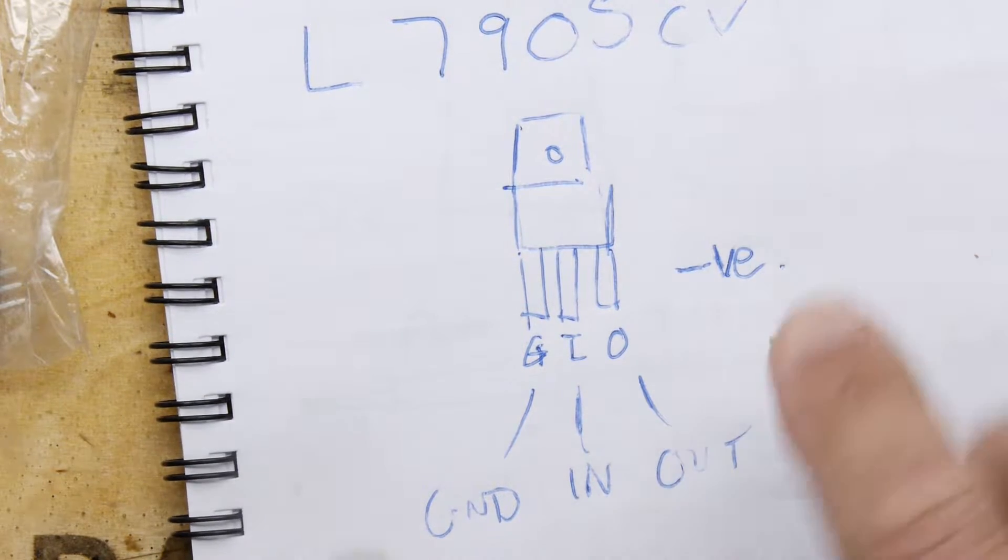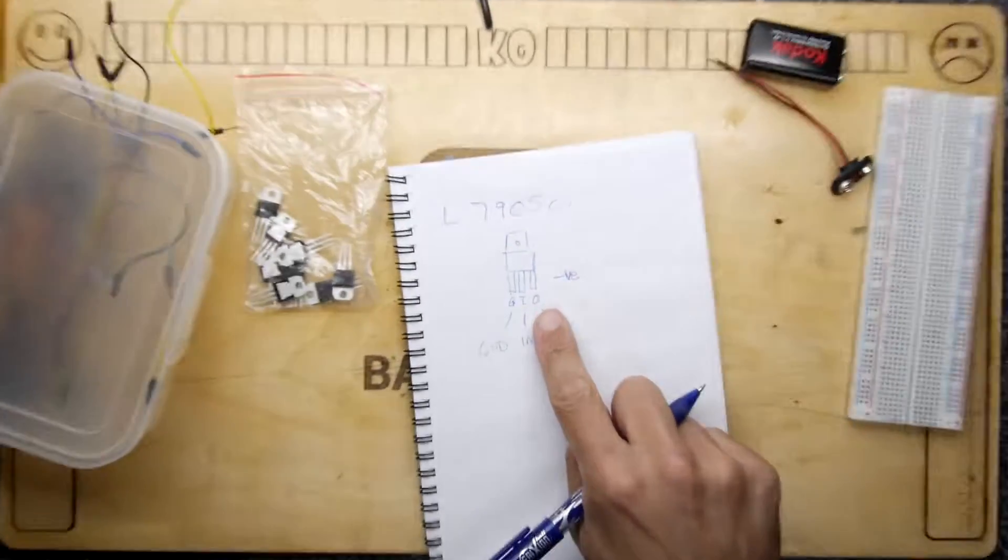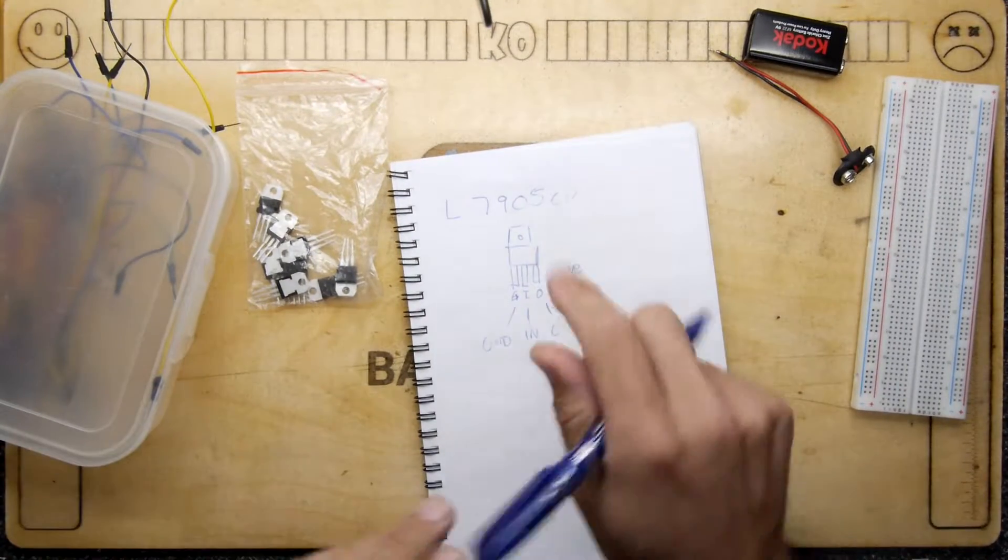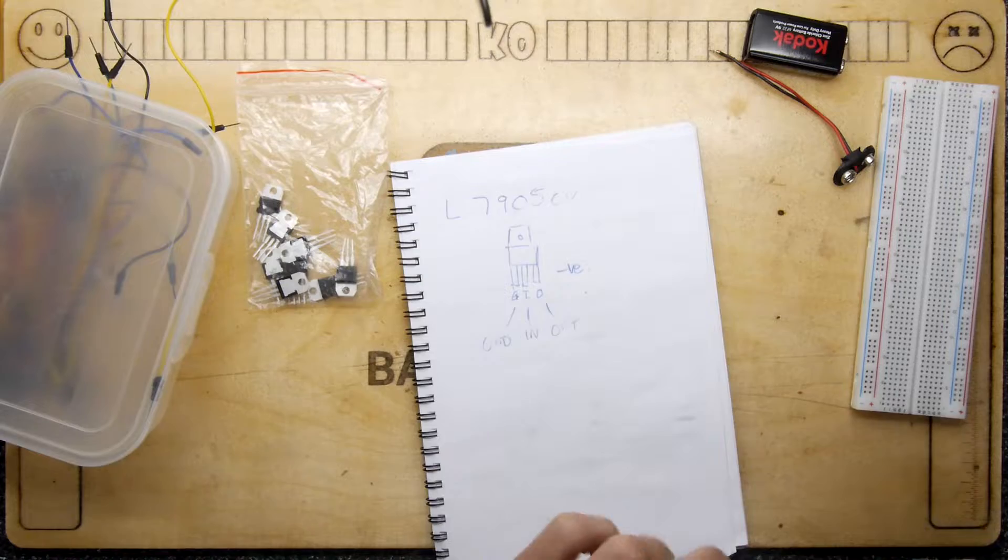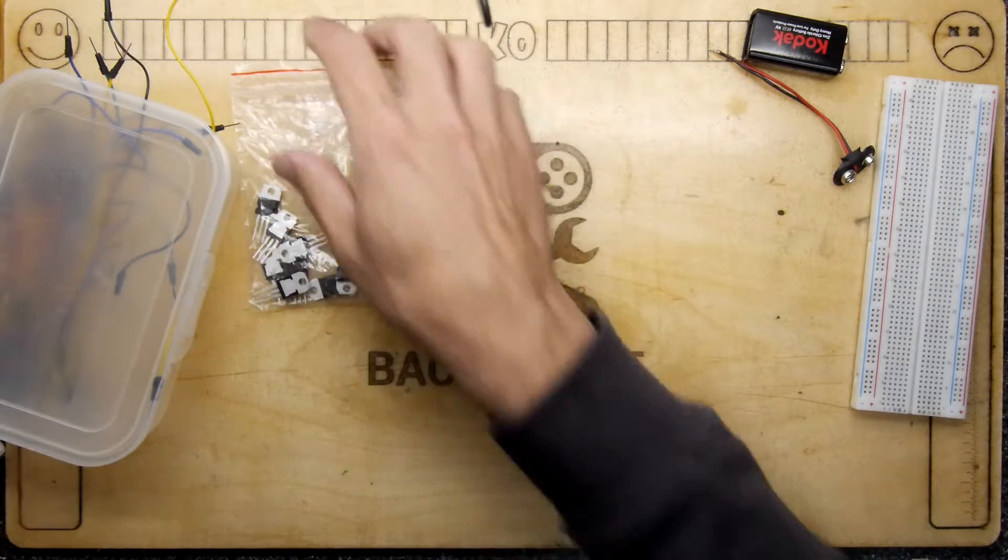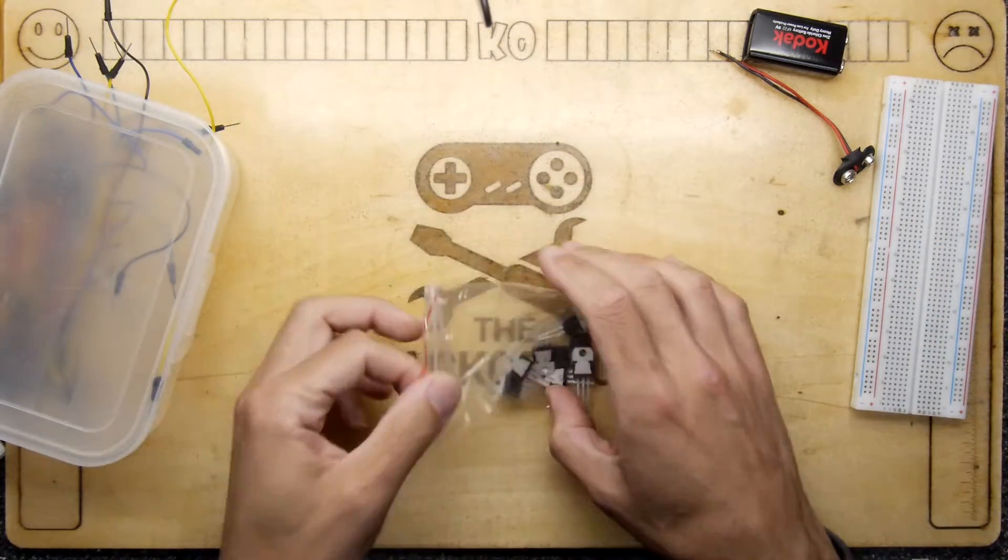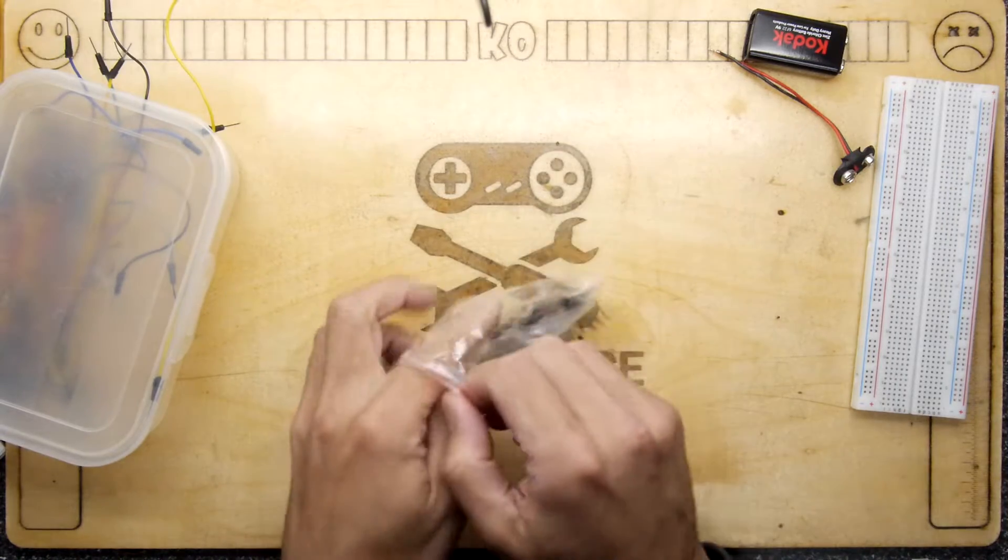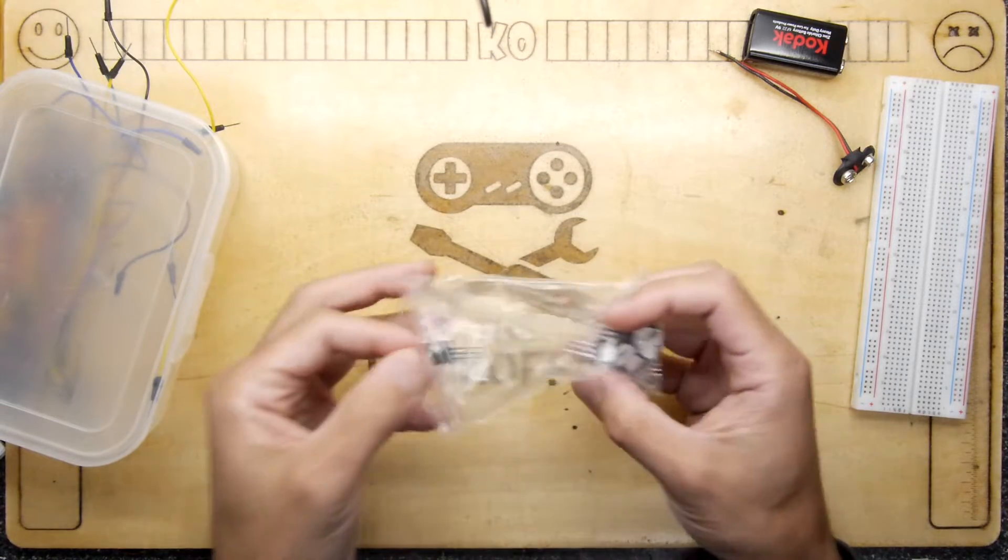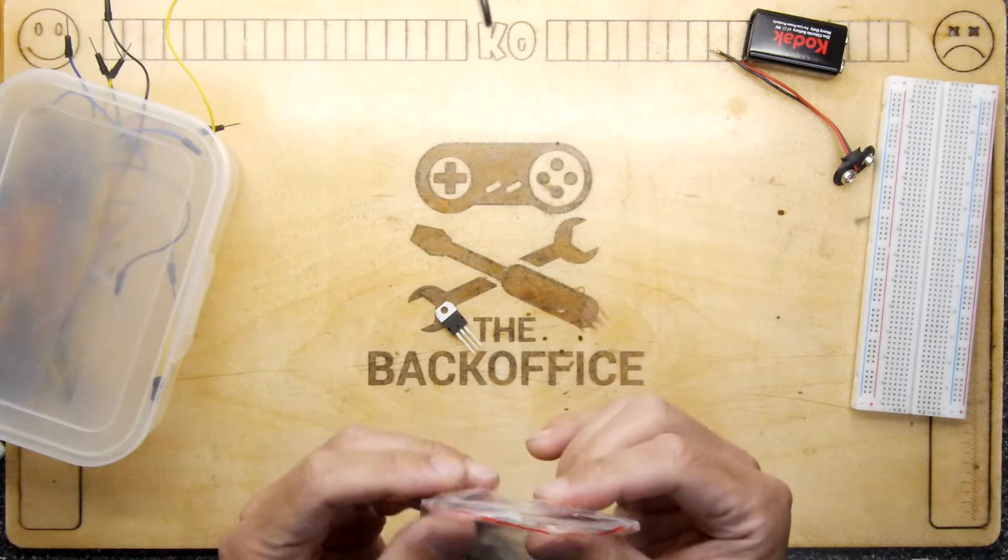So it actually takes a minus, say minus 12, and converts it into a minus 5. In the same way that you use a regulator to go from a plus value to a smaller plus value, this takes a large negative value and makes it into a smaller negative value.